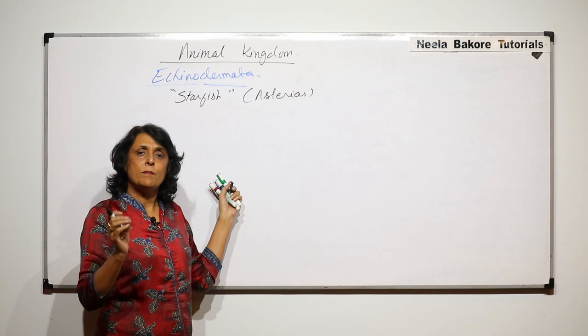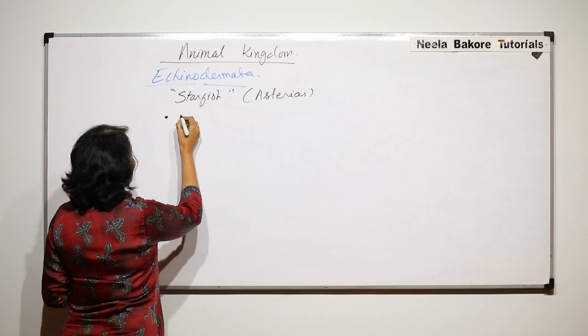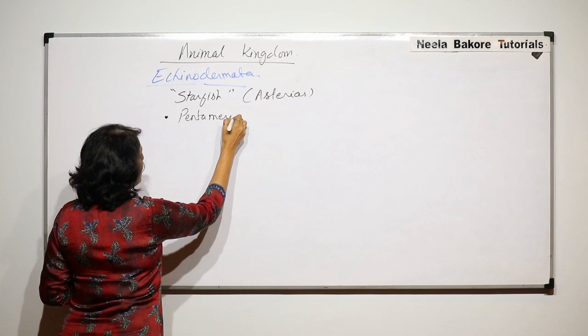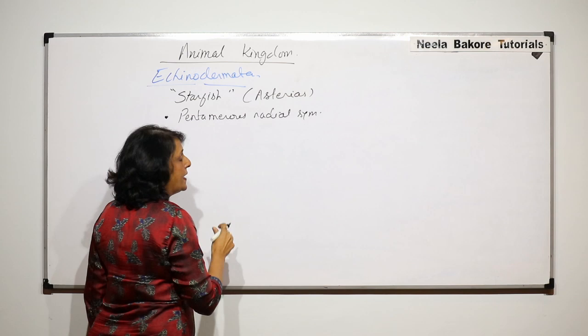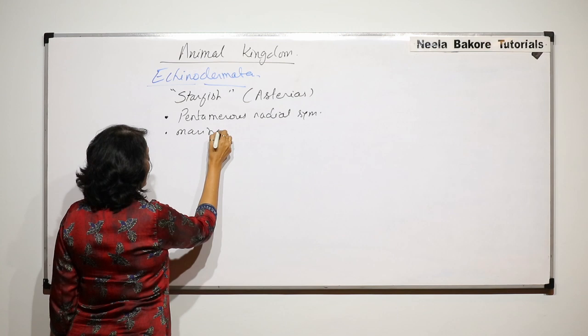They are radially symmetrical and the radial symmetry is pentamerous — pentamerous radial symmetry. They are marine and benthic animals.